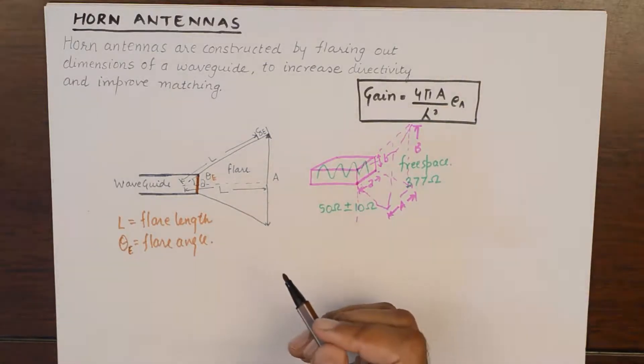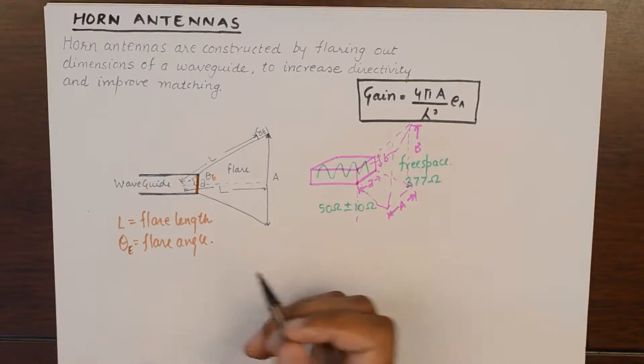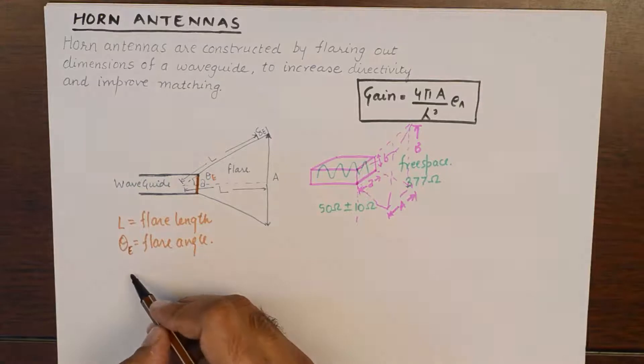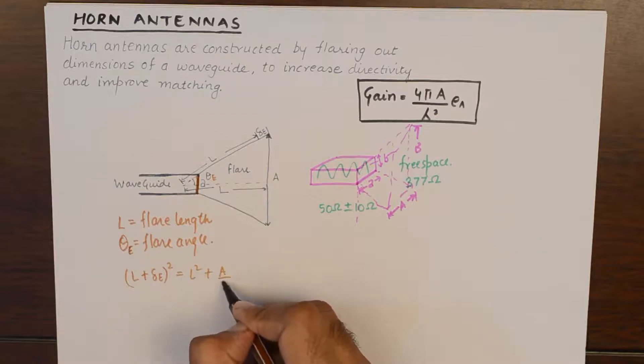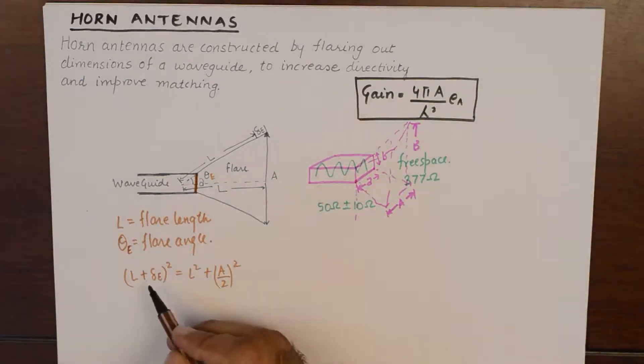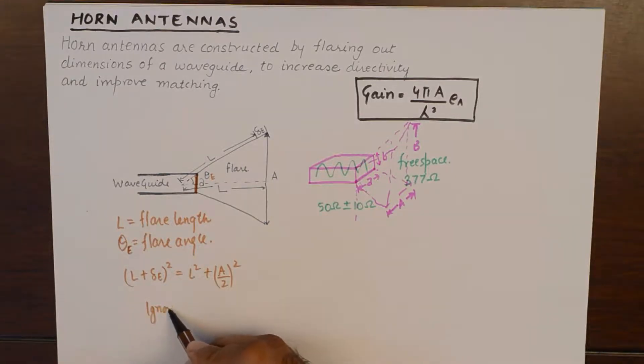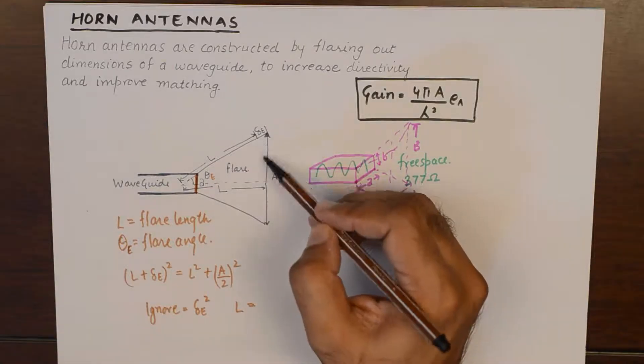Now, the geometry of this horn antenna can solve a lot of questions and the geometry is pretty simple. If we use Pythagoras theorem on this right angle triangle and if we ignore lambda E squared term after opening this bracket, then we can find out the flare length in terms of the enhanced mouth.